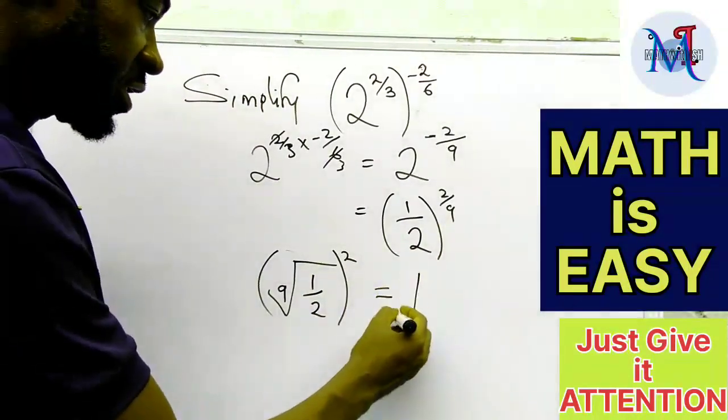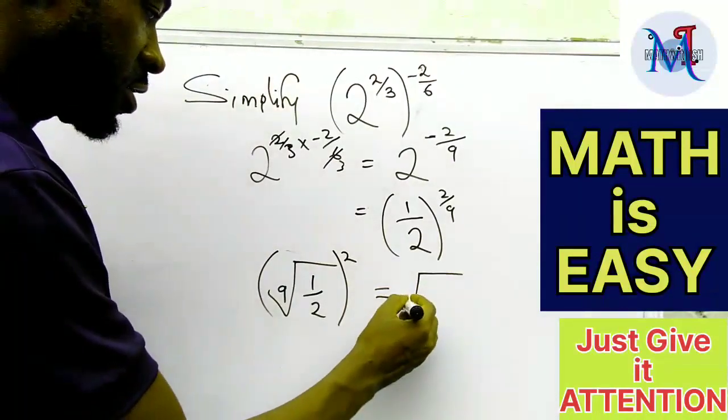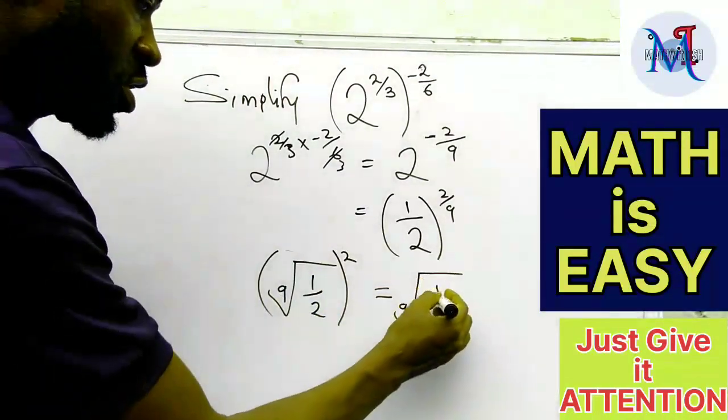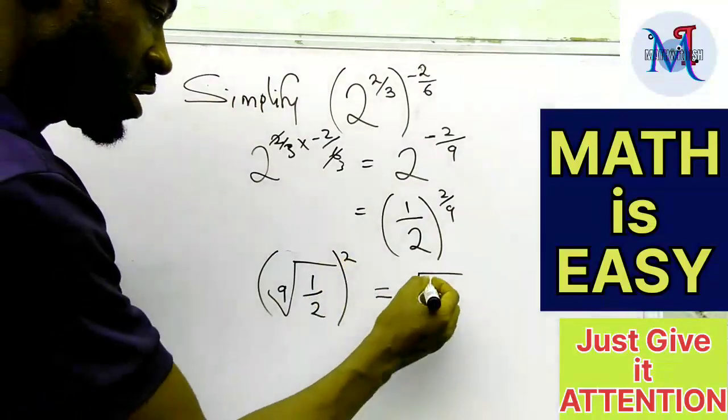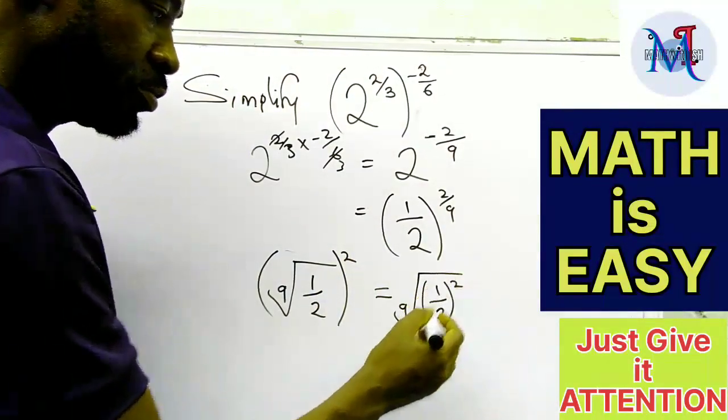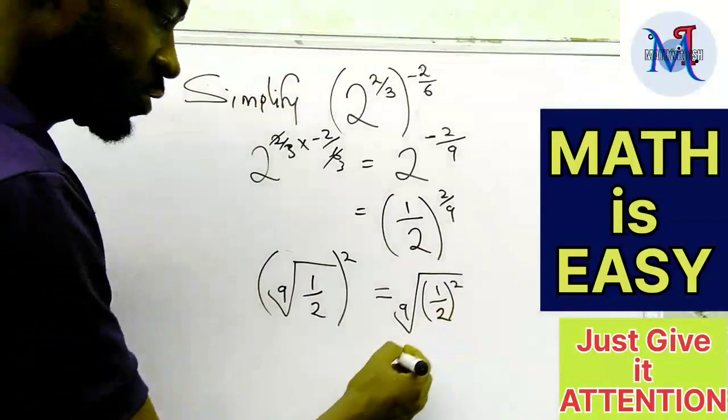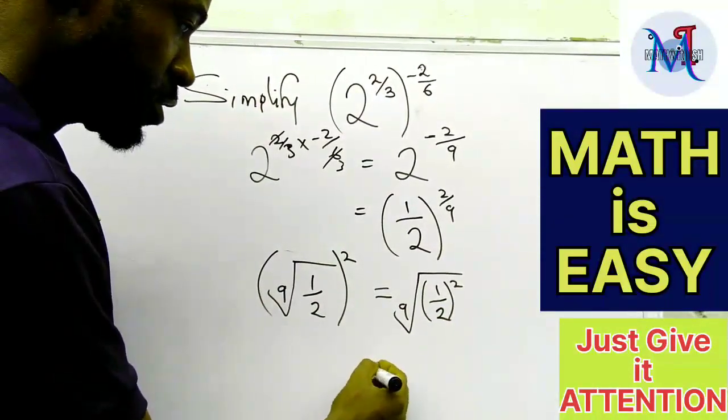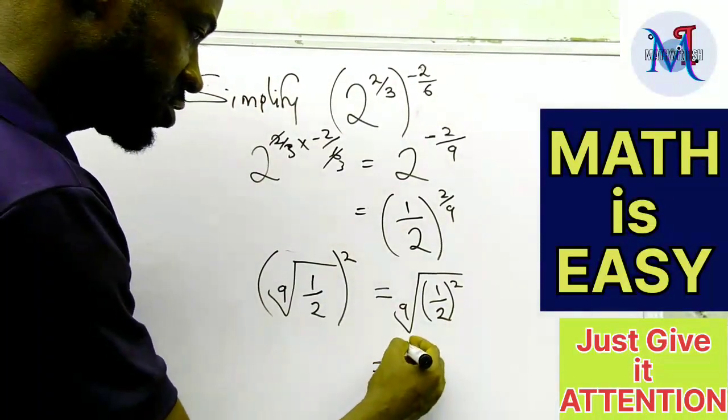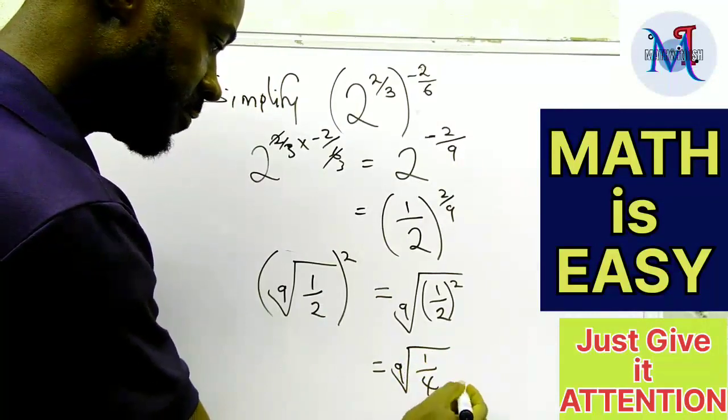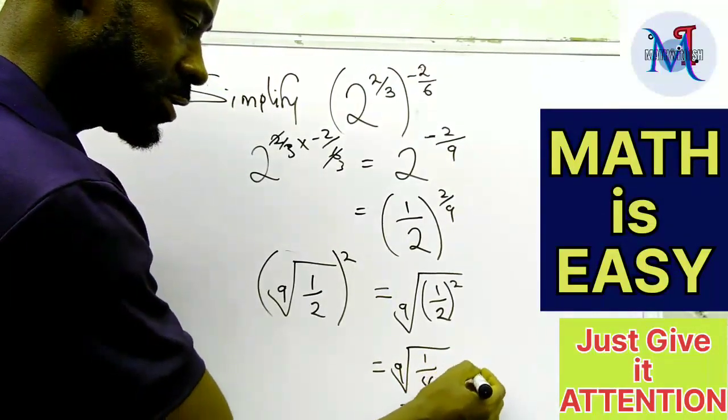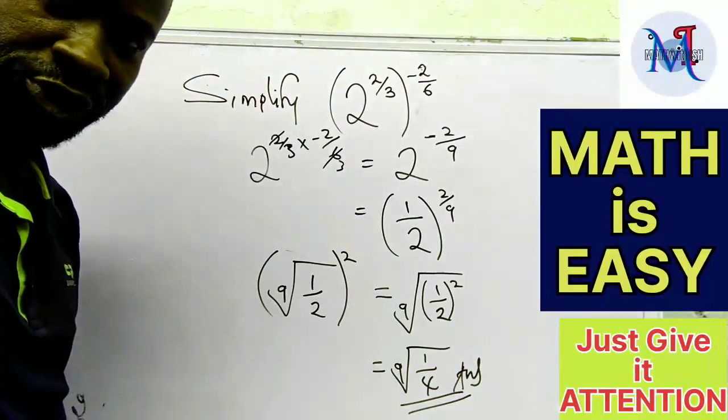And whenever you have something like this, it can also be written as 1 over 2. So this 2 here can also be brought inside the radical sign. And so that our final answer becomes the 9th root of 1 over 4. And this is the solution to this problem.